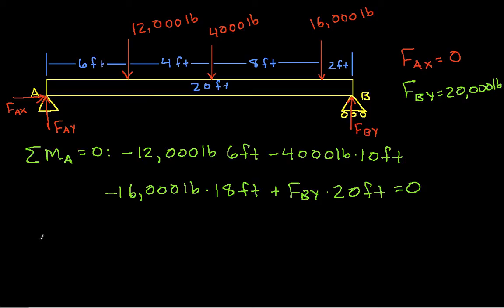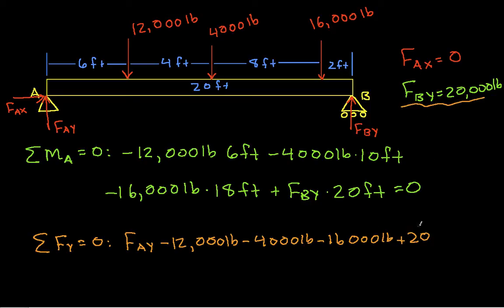Then we have the sum of the forces in the Y direction equal to zero. We have F_AY minus 12,000 pounds minus 4,000 pounds minus 16,000 pounds plus 20,000 pounds, that's F_BY. This equals zero.